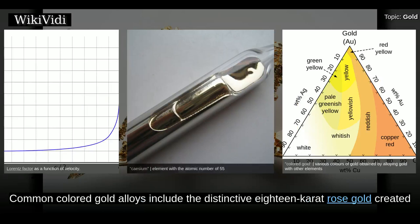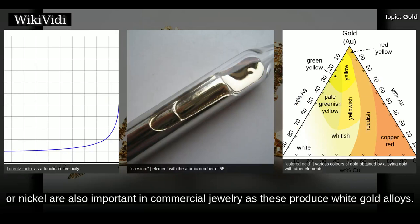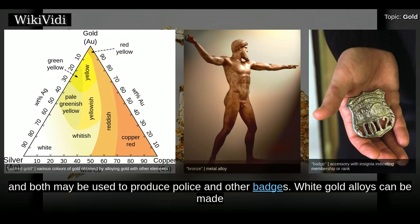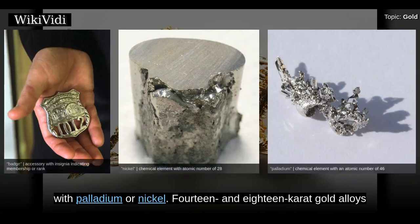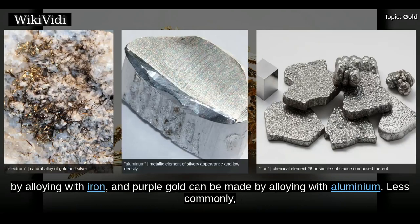Common colored gold alloys include the distinctive 18-karat rose gold, created by the addition of copper. Alloys containing palladium or nickel are also important in commercial jewelry as these produce white gold alloys. 14-karat gold-copper alloy is nearly identical in color to certain bronze alloys, and both may be used to produce police and other badges. White gold alloys can be made with palladium and nickel. 14 and 18-karat gold alloys with silver alone appear greenish yellow and are referred to as green gold.